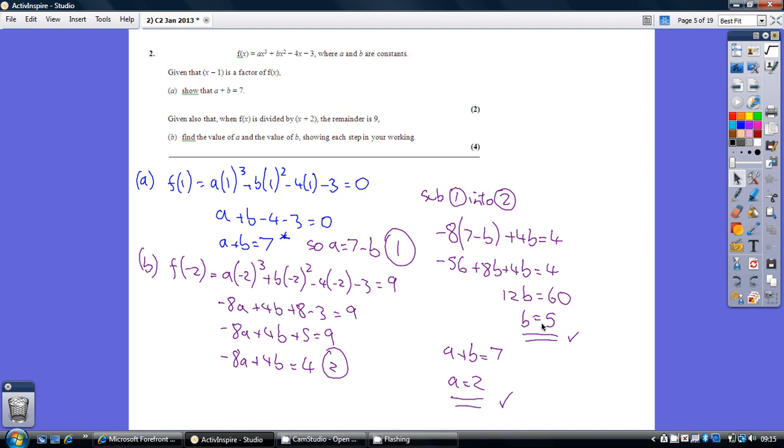Substitute back into whichever formula you want - so substitute back into this one as it's easier. a and b together are seven, but as b is five, a must be two.